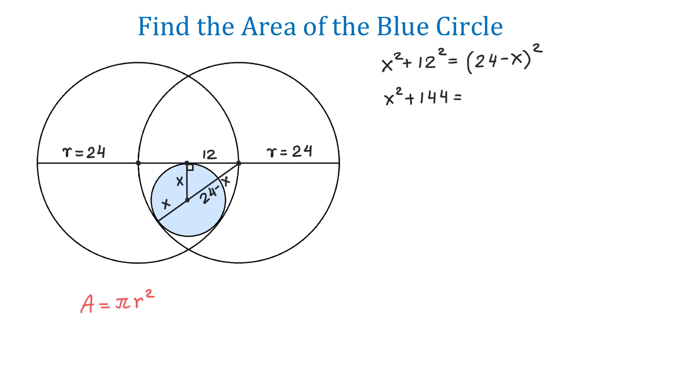Then, on the right side, to raise 24 minus x to the second power, we will use the following formula: a minus b to the second power equals a squared minus 2ab plus b squared.